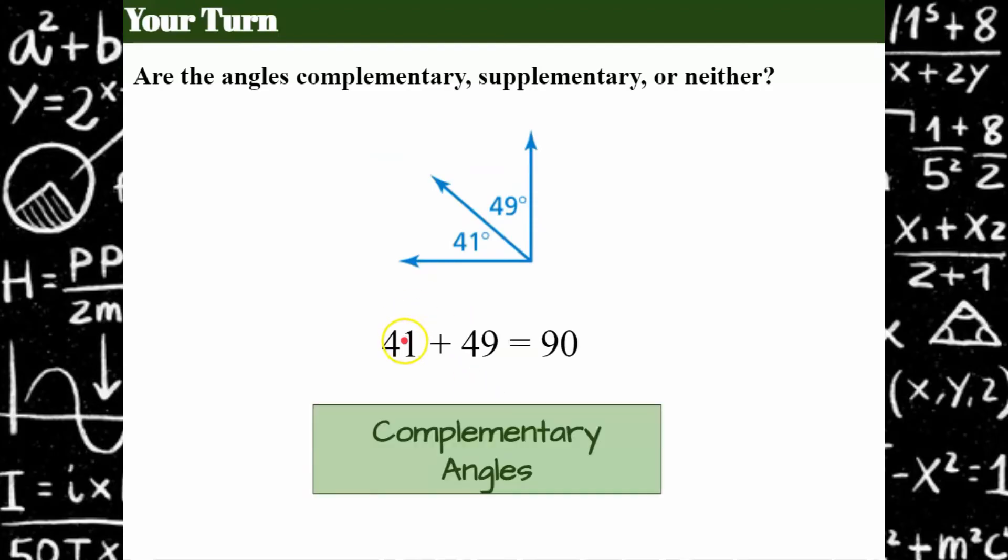So let's see how you did. 41 plus 49 is equivalent to 90. Therefore, these angles are complementary.